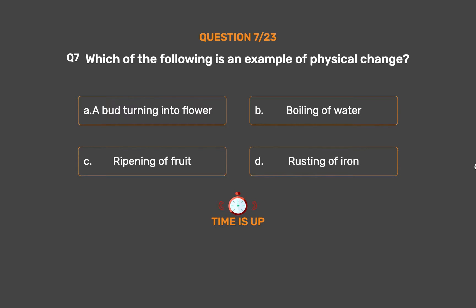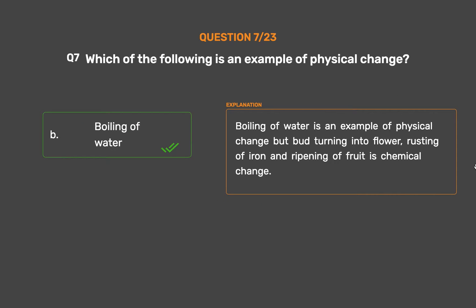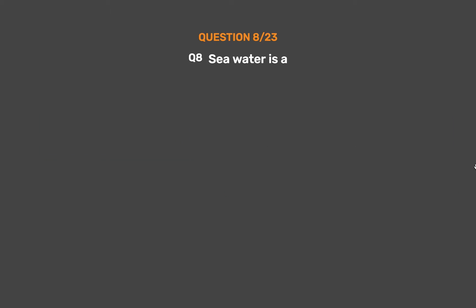The correct answer is Option B: Boiling of water. Boiling of water is an example of physical change, but a bud turning into a flower, rusting of iron, and ripening of fruit are chemical changes.